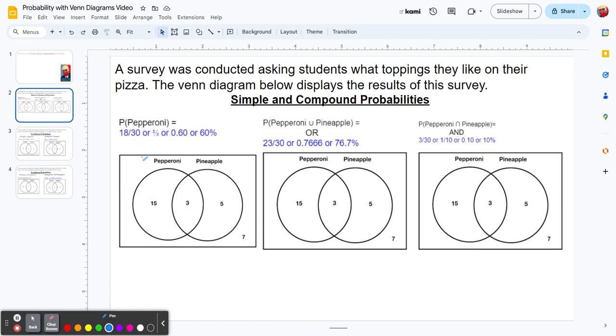Our first example is a Venn diagram. The left circle represents people who prefer pepperoni on their pizza. The right circle represents people that prefer pineapple. To read the Venn diagram, look at pepperoni - there's 15 and 3 in there, so there's actually 18 people that prefer pepperoni.